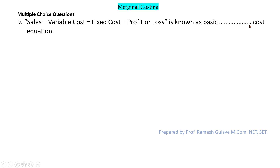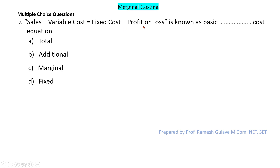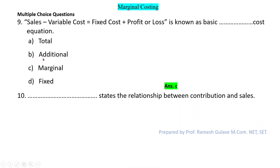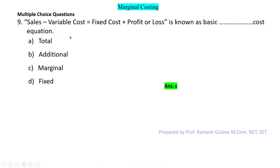The next question says: sales minus variable cost equals fixed cost plus profit or loss is known as the basic dash cost equation. This equation — sales minus variable cost equals fixed cost plus profit — is the basic marginal cost equation. So the right answer is the basic marginal cost equation.